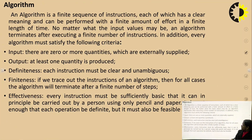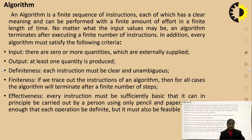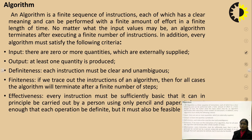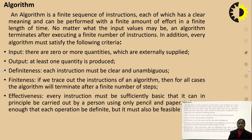Every algorithm must satisfy the following criteria. First is the input. Input means there are zero or more quantities which are externally supplied. Second one is the output. Output means if we have provided an input, then there is at least one quantity produced as the output.